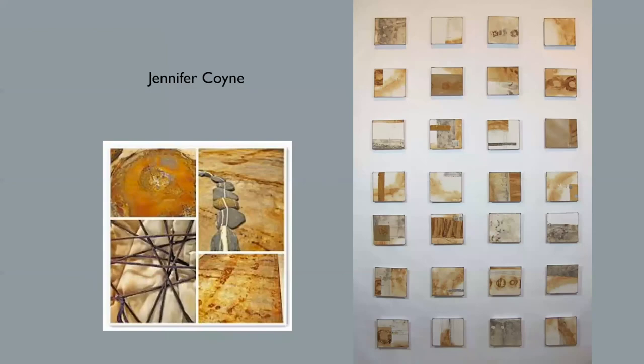Jennifer Coyne is another artist that I met at a workshop in Haystack. She uses paper and collaging techniques to create her pieces. She takes rusty implements and bundles them with textile, which is a process I was already doing — and seeing her do it just validated what I was doing. Think washers, rusty nails, railroad spikes, saw blades.